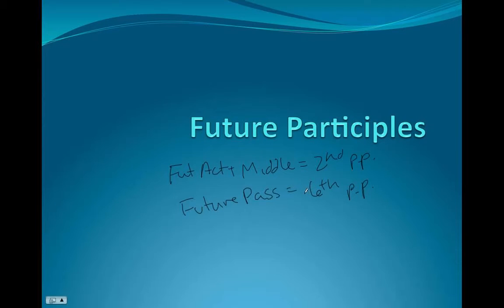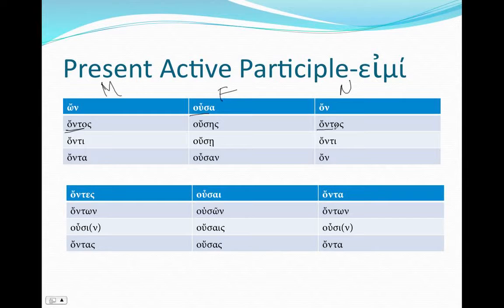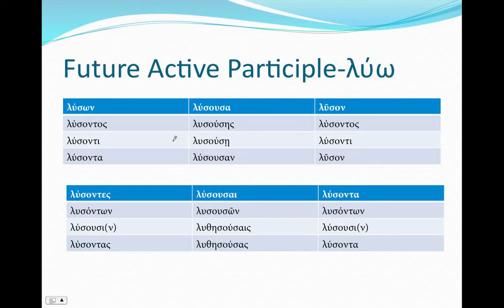Let's take a look first at the future active. Before we do that, I just want to review the present active participle of ἄμι. Remember the on, usa, on — it's a first and third declension adjective, where the masculine is a third declension whose stem is ont, the feminine is a first declension whose stem is us, and the neuter is a third declension whose stem is ont, just like the masculine.